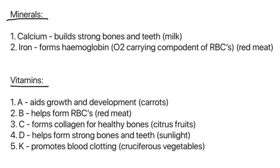Vitamins — we need to know five. Vitamin A aids growth and development, sourced from carrots. Vitamin B helps form red blood cells, sourced from red meat. Vitamin C helps form collagen for healthy bones, sourced from citrus fruits. Vitamin D helps form strong bones and teeth, sourced from sunlight. Vitamin K promotes blood clotting, sourced from cruciferous vegetables such as broccoli.